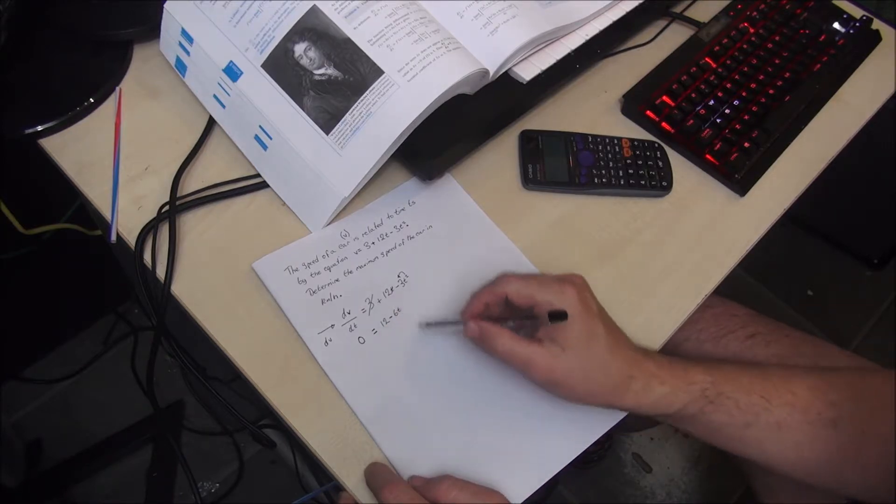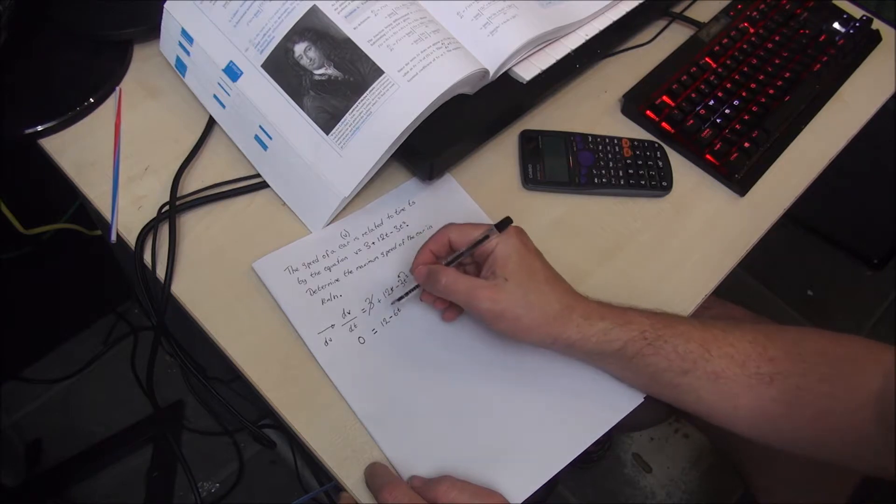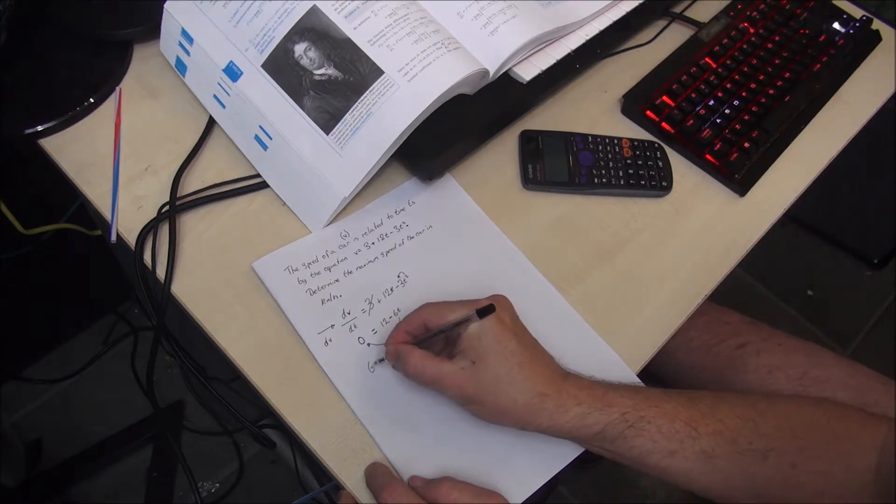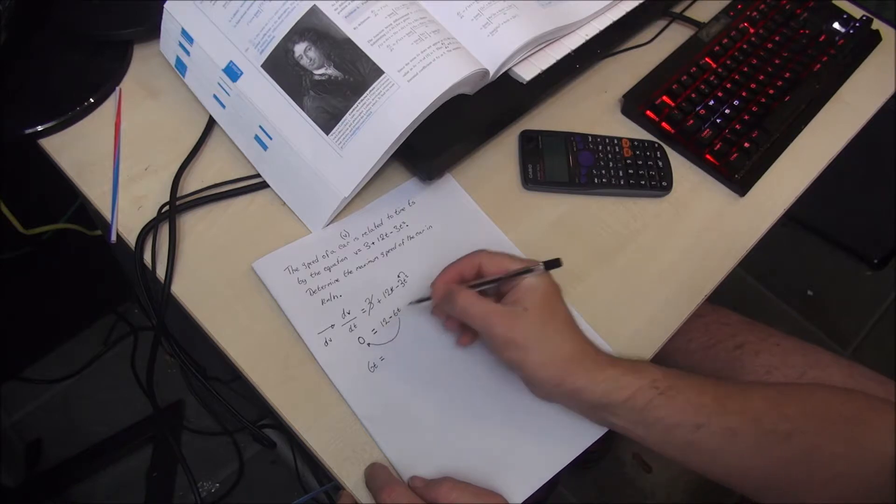And we can rearrange this equation to make t the subject by taking 6t over to the other side like this. So we have 6t is equal to 12.